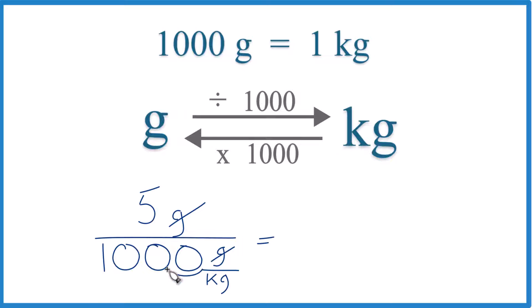Let's go 1, 2, 3 decimal places here, and then 1, 2, 3 decimal places here, put zeros as our placeholders, and we end up with 5 grams equals 0.005, and our units, kilograms. That's what's left.